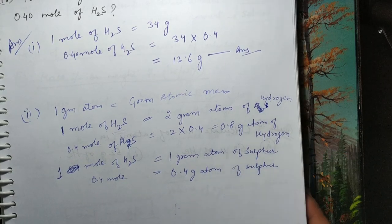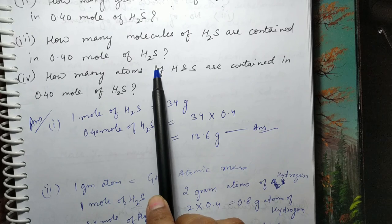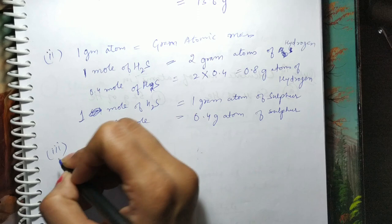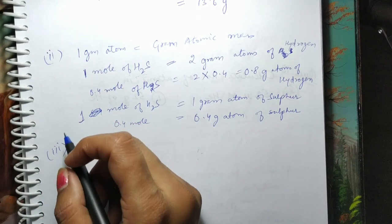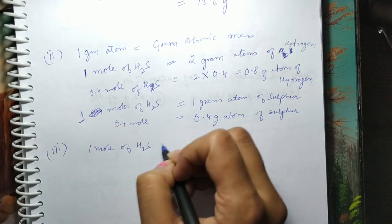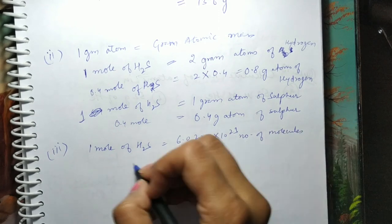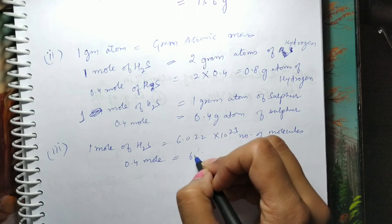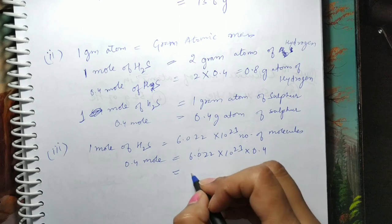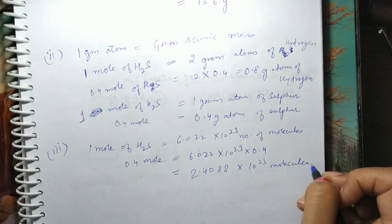Third part: how many molecules of H₂S are contained in 0.4 mol of H₂S? 1 mol of H₂S mein Avogadro's number of molecules hote hain. To 0.4 mol mein simply multiply karenge — answer aa jayega 2.4088×10²³ molecules.